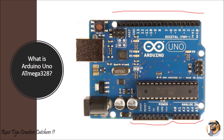The ground pins are where the negative terminal of the battery or power supply is connected. The 5V pin lets you supply power to a sensor or other electronic devices connected to Arduino. Using the 3.3V pin, you can also fetch 3.3 volts from the Arduino itself. There are also reset and IOREF pins. So the bottom part has six analog pins and the upper part is the power section.